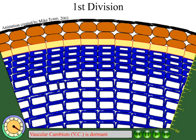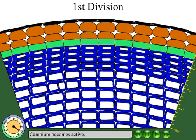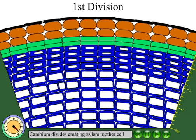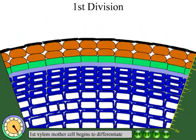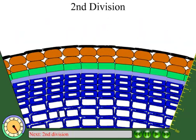At the start of each year, the vascular cambium is dormant. As the weather warms and the days get longer, the cambium becomes active, swells, and goes through its first division, forming a xylem mother cell.